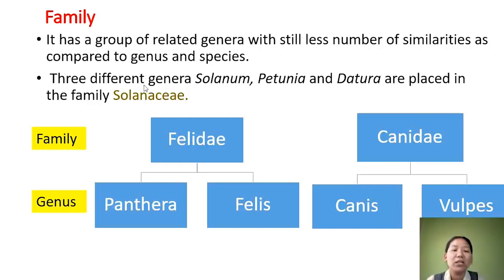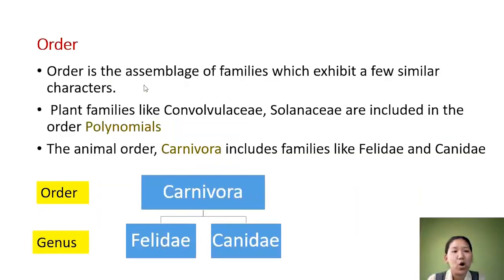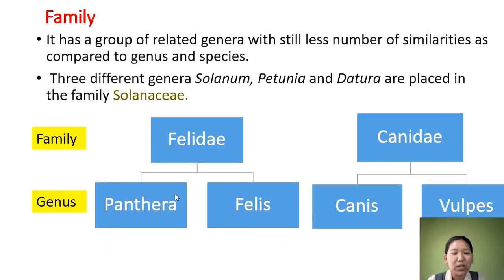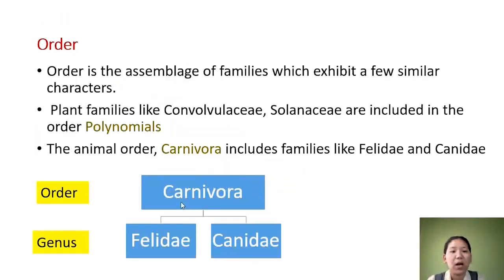Order is an assemblage of families which exhibit a few similar characters. For example, Felidae and Canidae belong to different families but come together under the order Carnivora — flesh-eating animals. Likewise in plants, Convolvulaceae and Solanaceae belong to different families but the same order, Polemoniales.